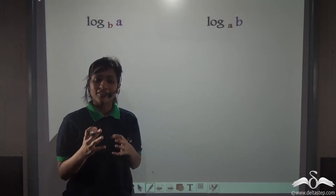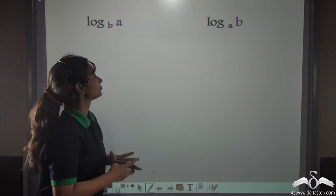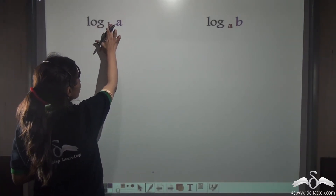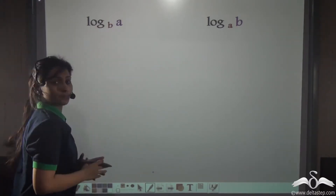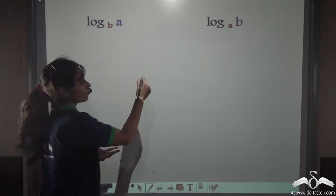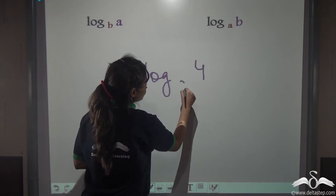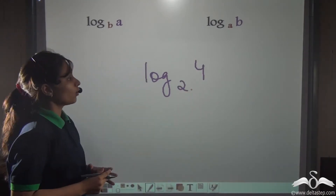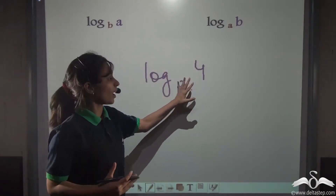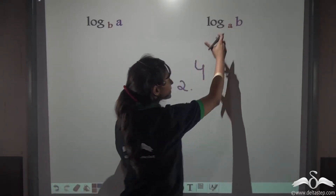Today, we will learn about a very interesting concept of logarithm. Suppose you have log A to the base B. We know logs exist in such forms — log 4 to the base 2. With the help of this, can you tell me how we can find out the opposite, like log B to the base A?